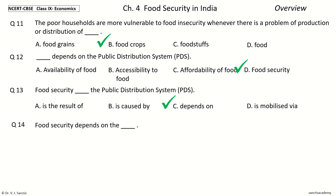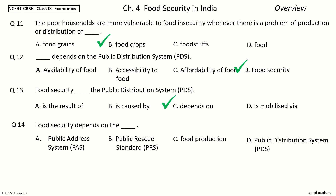Question 14: Food security depends on the Dash. The options are Public Address System (PAS), Public Rescue Standard (PRS), Food Production, Public Distribution System (PDS). Your time to choose. And the answer is Public Distribution System, PDS. So, food security depends on the Public Distribution System.